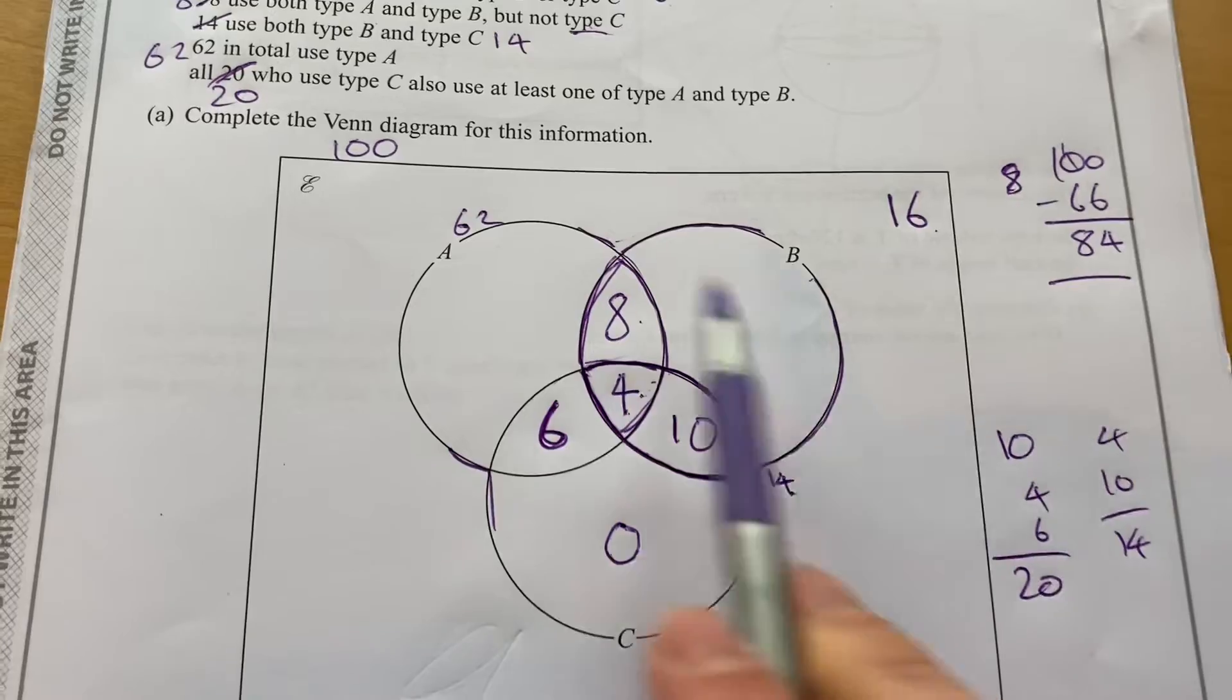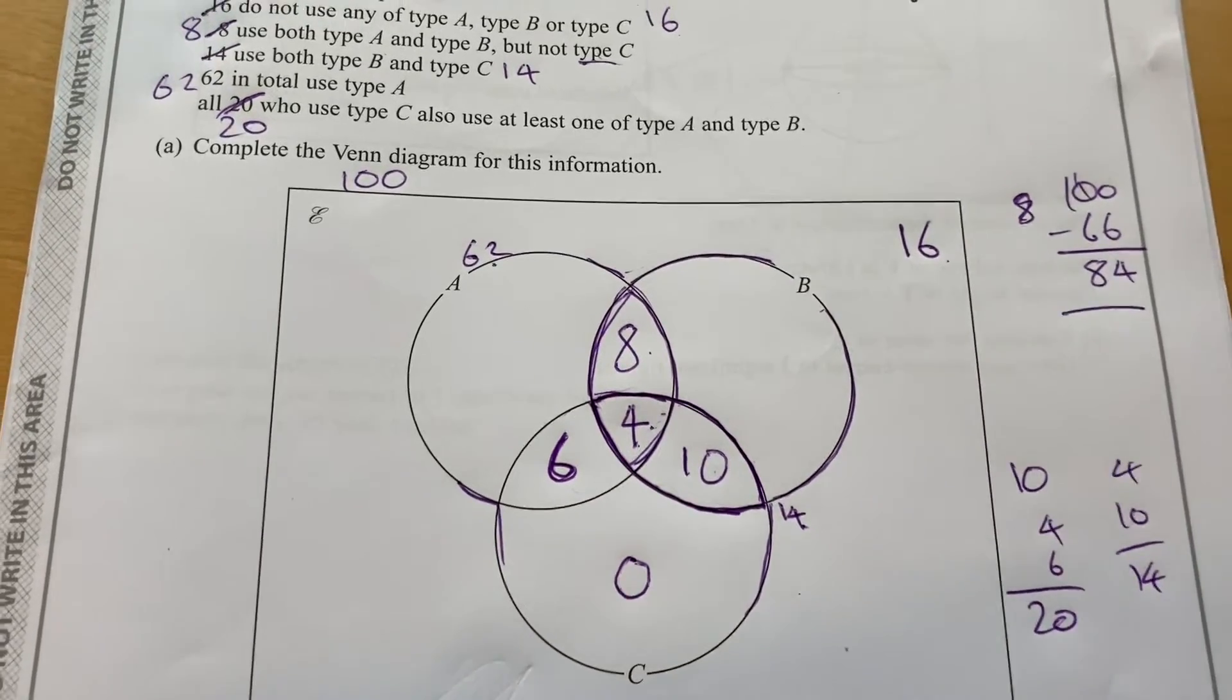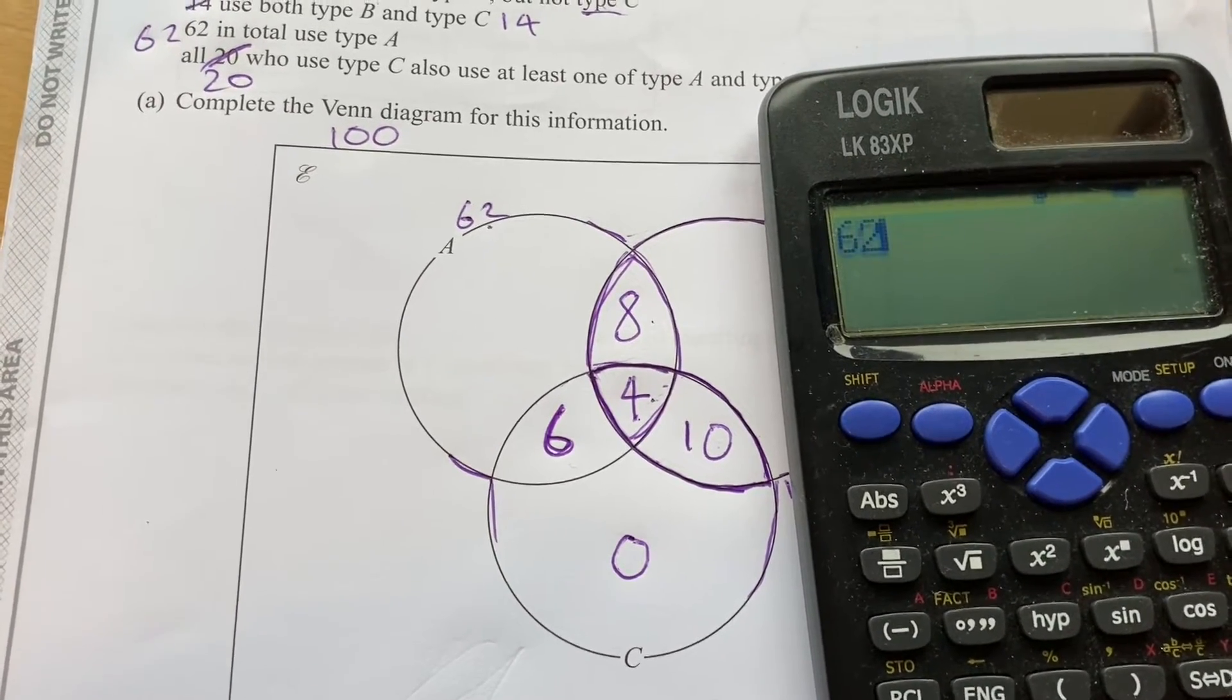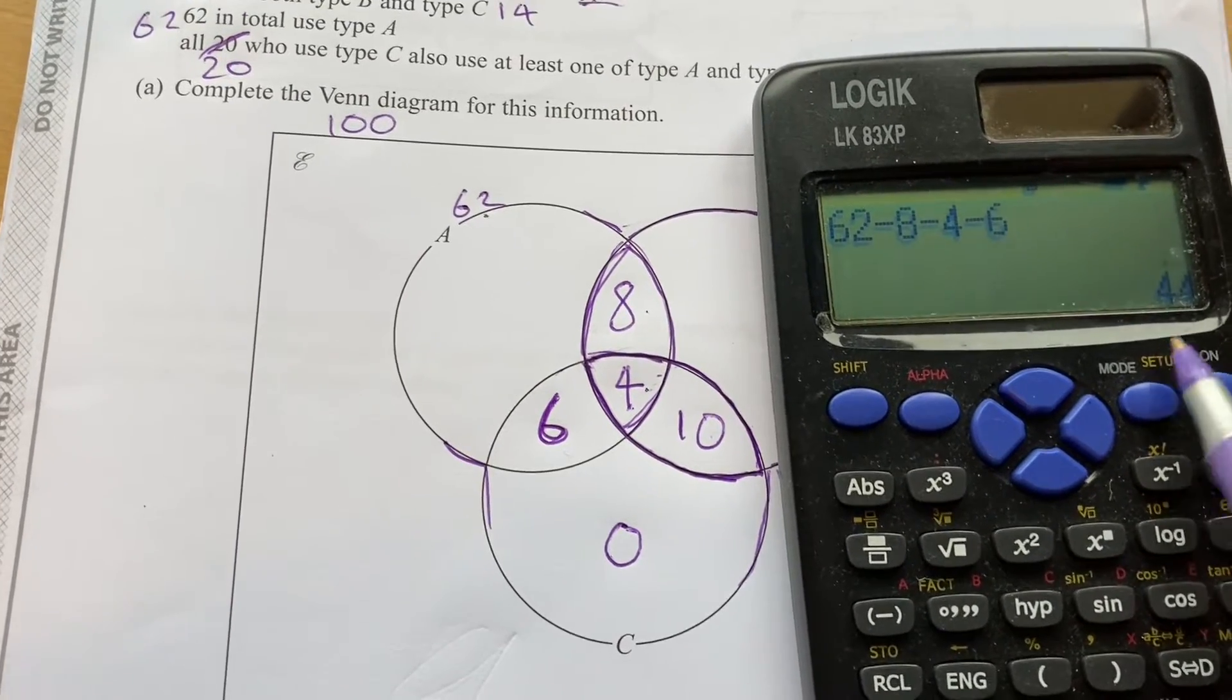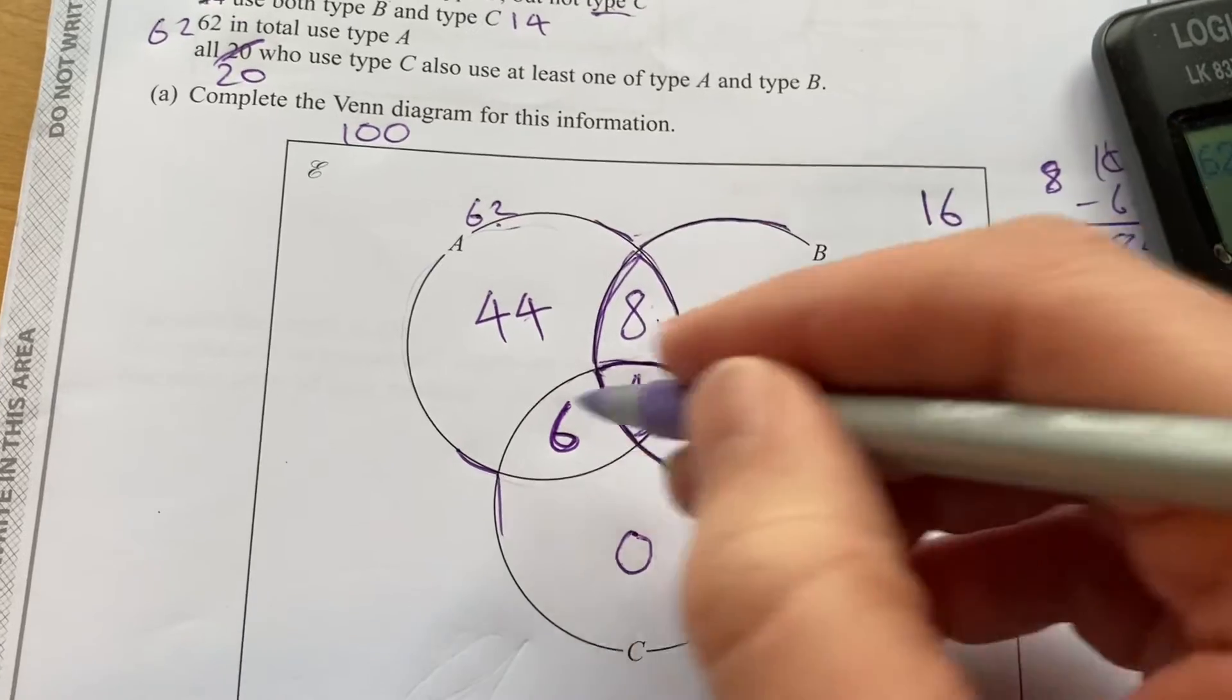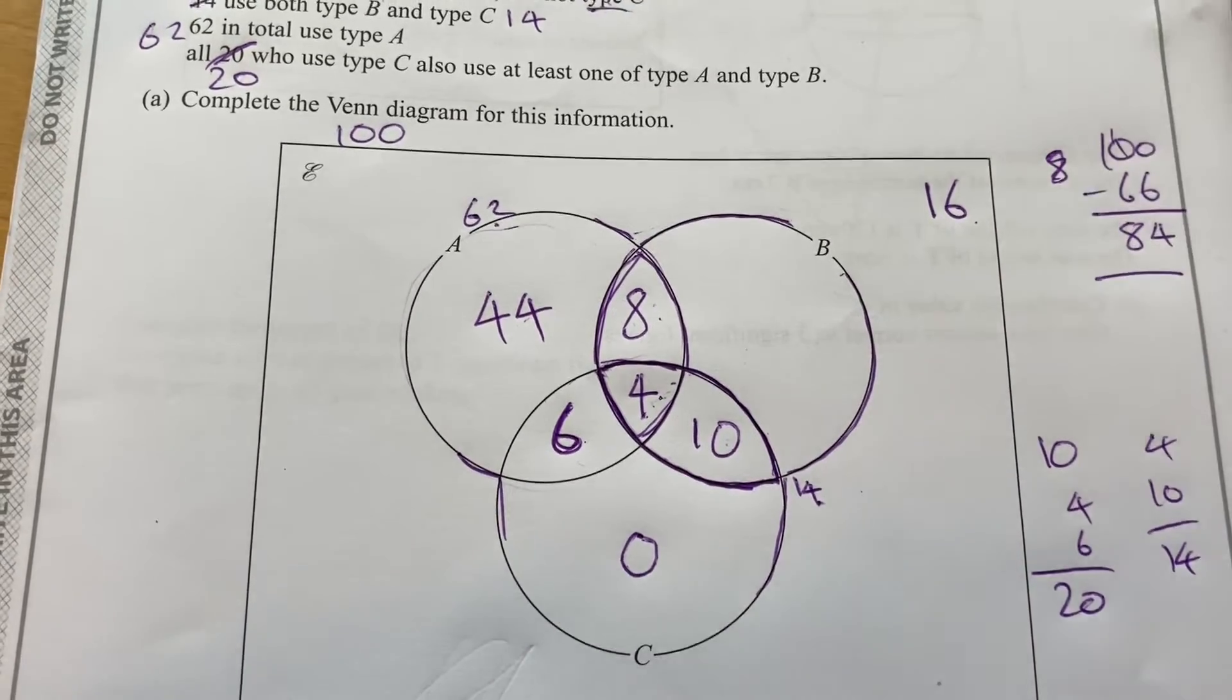We've still got two pieces of this Venn diagram that we haven't filled in, and that's where we're going to need to use that 62. It is a calculator paper, so let's use the calculator. We're going to do 62 minus 8 minus 4 minus 6, and that's going to leave us 44. So 44 use A on its own, because those four sections all add up to 62.